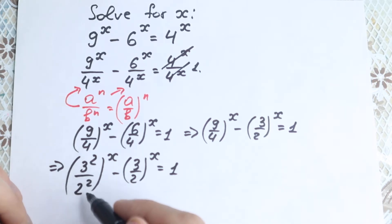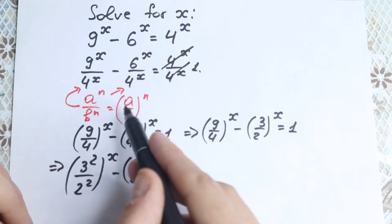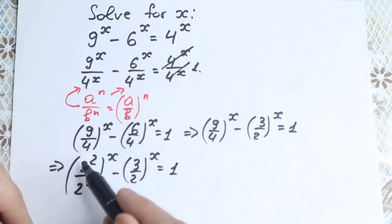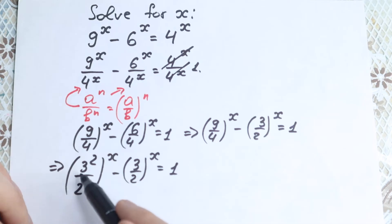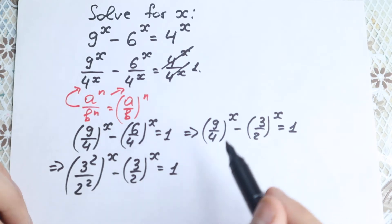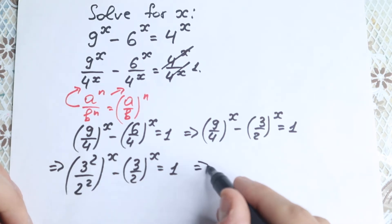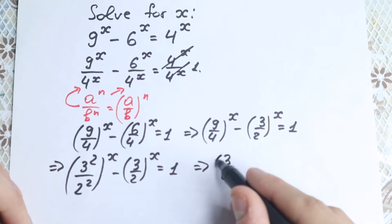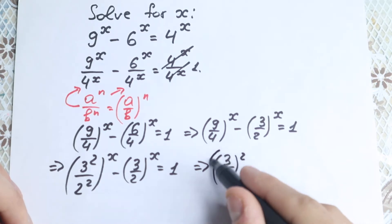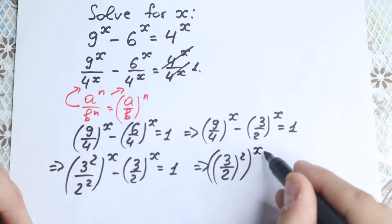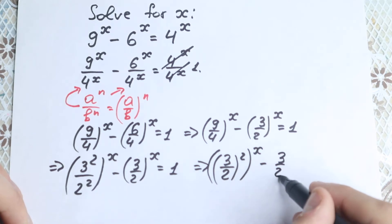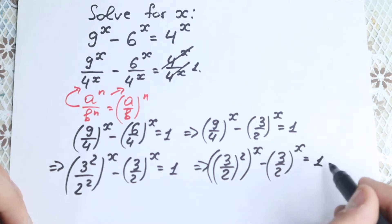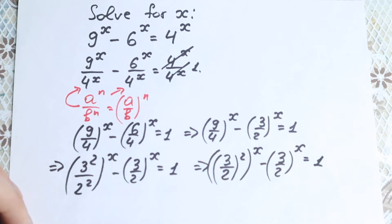Let's go back to our rule, because we have different bases but the same exponent. We can write 3 squared over 2 squared as 3 over 2, all squared. So let's write it as 3 over 2 squared, raised to the power x, minus 3 over 2 to the power x, equal to 1.